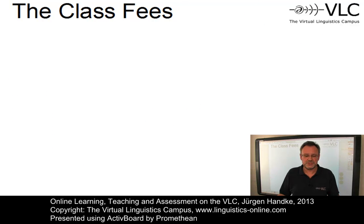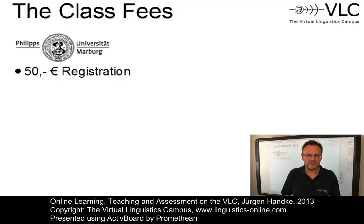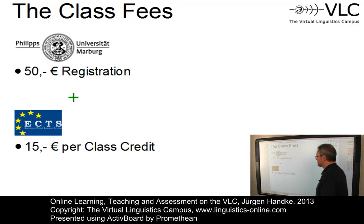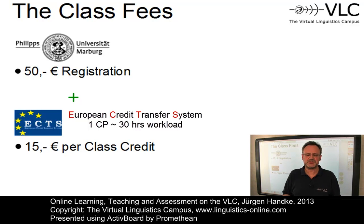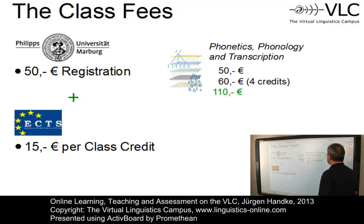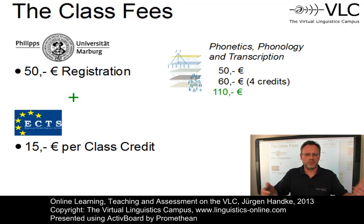What does it cost? Not very much. We charge 50 euros for the registration at the University of Marburg. These registration fees give you the status of an online guest student at our university and only have to be paid once per term, irrespective of how many classes you take. For the classes themselves, we charge 15 euros per credit. The credits are awarded in accordance with the European Credit Transfer System — one credit is the equivalent of 30 hours workload. So for a four-credit class such as Phonetics, Phonology and Transcription, the fees are 50 euros for the registration at Marburg University plus 60 euros for the four credits, for a total of 110 euros.